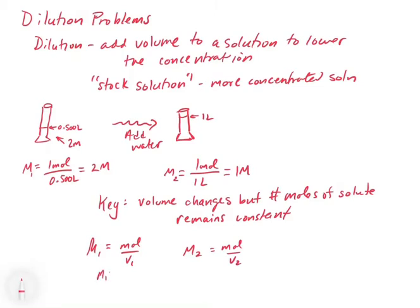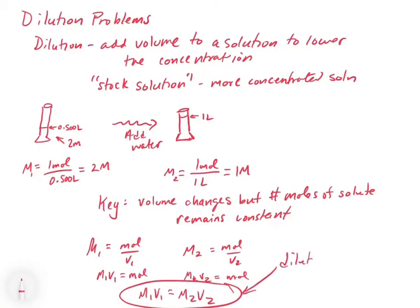If we reorganize this such that M1 times V1 equals the number of moles, and M2 times V2 equals the number of moles, since the moles aren't changing, we could say that M1V1 equals M2V2. This becomes our dilution equation.